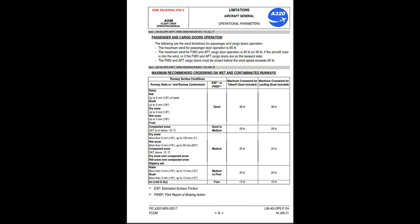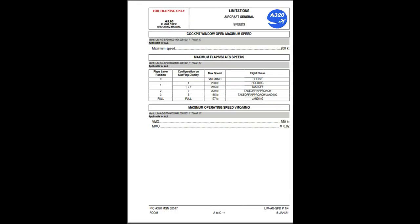Runway contaminants: water more than 3mm up to 13mm, slush more than 3mm up to 13mm. Estimated surface friction or pilot report of braking action: medium to poor. Maximum crosswind for takeoff (gust included): 20 knots. Maximum crosswind for landing (gust included): 20 knots. Runway contaminant: ice, cold and dry. Estimated surface friction or braking action: poor. Maximum crosswind for takeoff (gust included): 15 knots. Maximum crosswind for landing (gust included): 15 knots. Cockpit window open maximum speed: 200 knots.